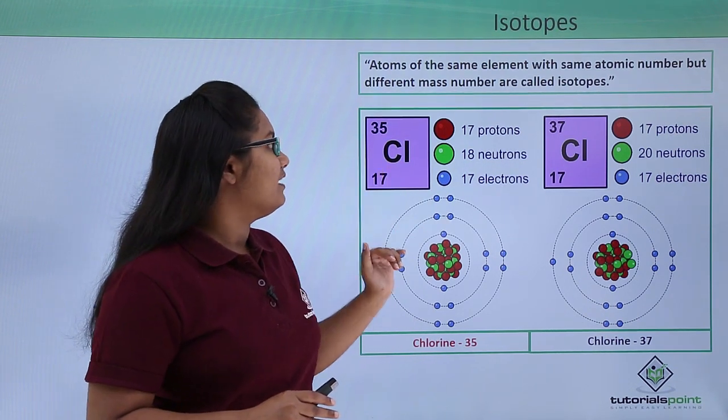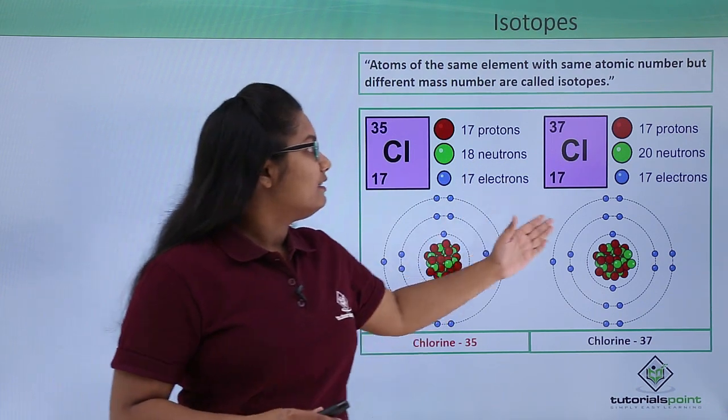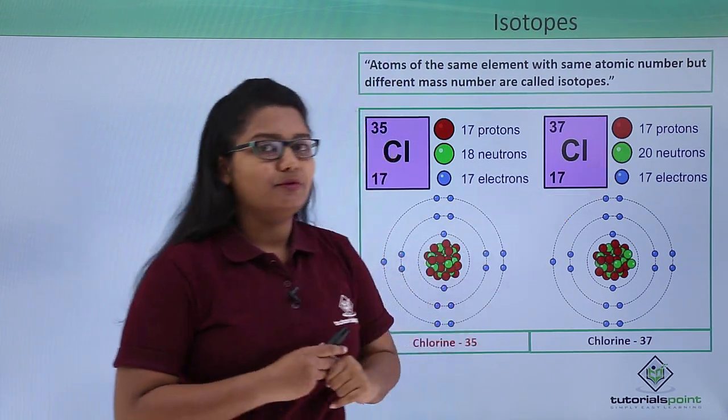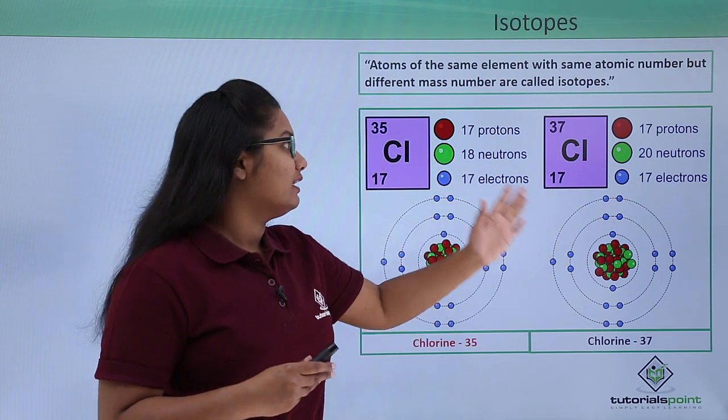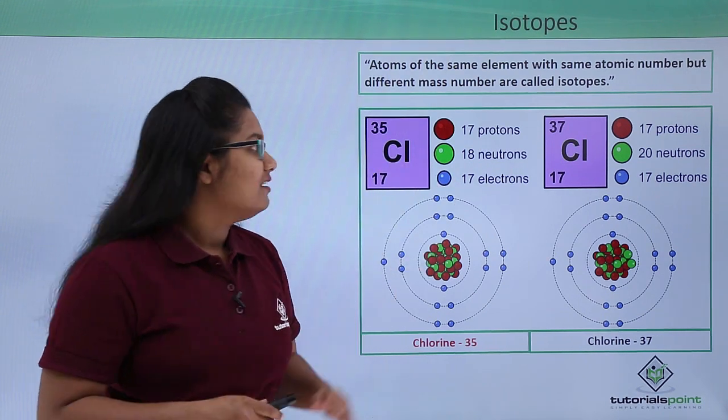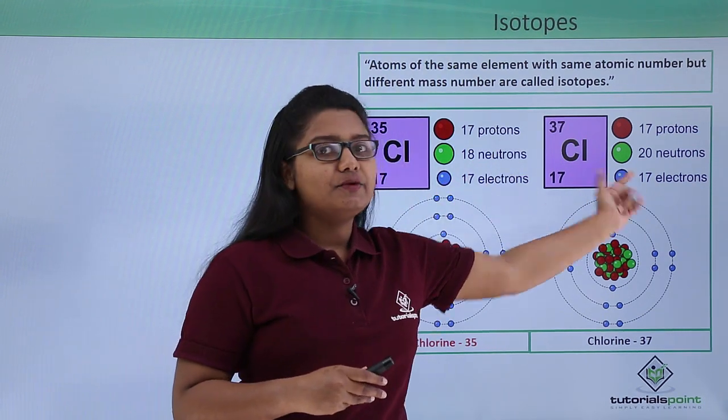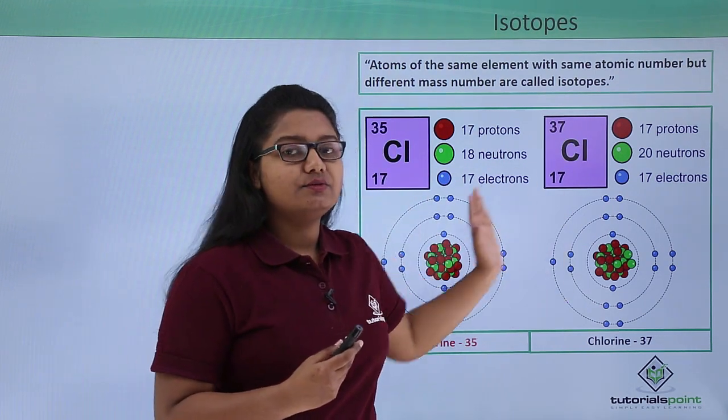Chlorine-35 has 17 protons and chlorine-37 also has 17 protons. But there is a difference in the number of neutrons in both cases. Chlorine-35 has 18 neutrons whereas chlorine-37 has 20 neutrons, which makes the difference between these two isotopes.